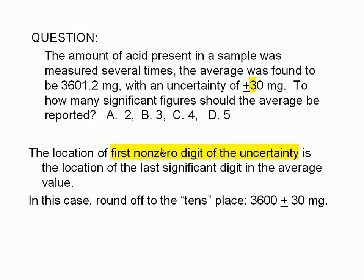Therefore, we must round off the average value to the tens place. In other words, the number in the tens place is the last significant digit. This means that there are three significant digits in the average.